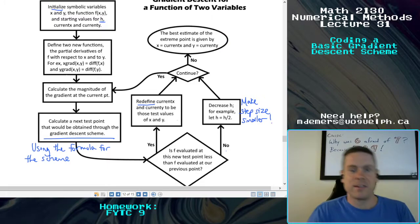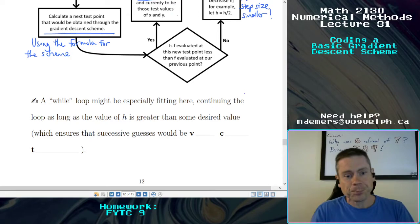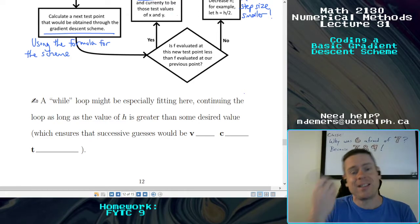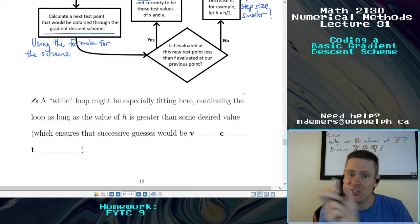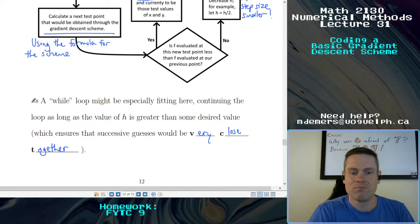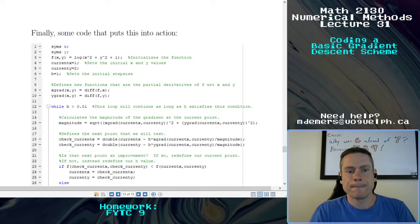So that's really all there is to it. There's a single main loop that will go again and again, we have to keep updating the scheme a little bit. A while loop might be especially fitting here, continuing the loop as long as h is bigger than some value, which is going to ensure that those estimates are close together. Our steps are very close together. So that ensures that successive guesses would be very close together. So keep going until h is less than a millionth or something like that.